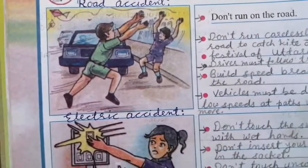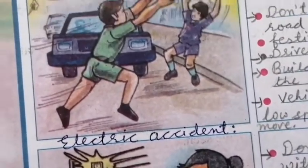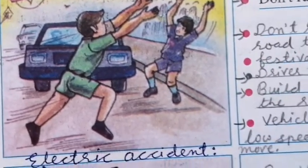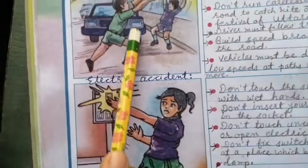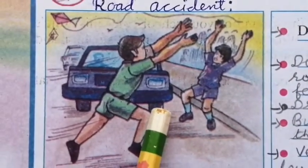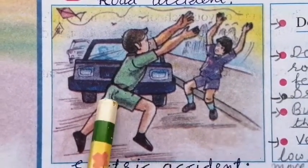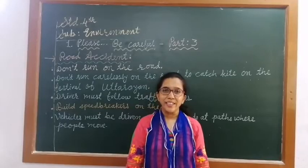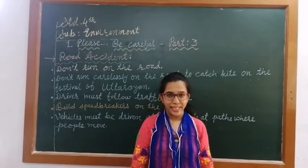Accident se bachnay ke liye humay kya kya dhyan rakhna hai, wo yaha pe likhna hai. So let's begin with the first picture — road accident. Road accident se bachnay ke liye kya karna hai, uske tarikay likhnay hai. Now children, we will write the prevention of road accidents.